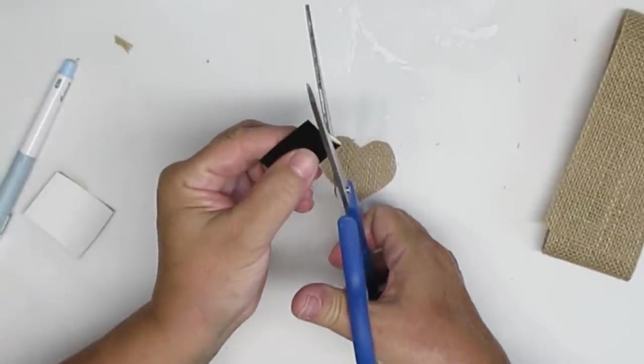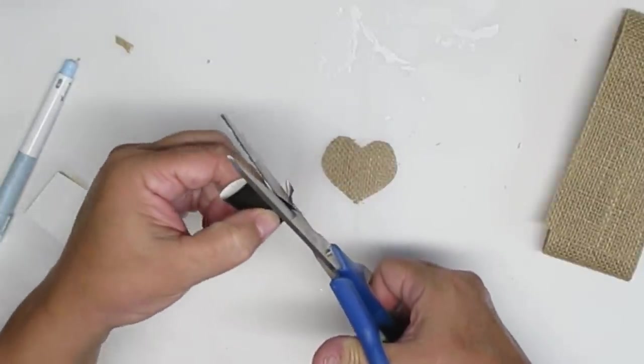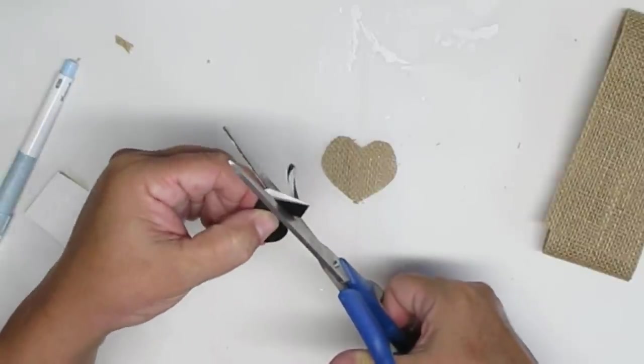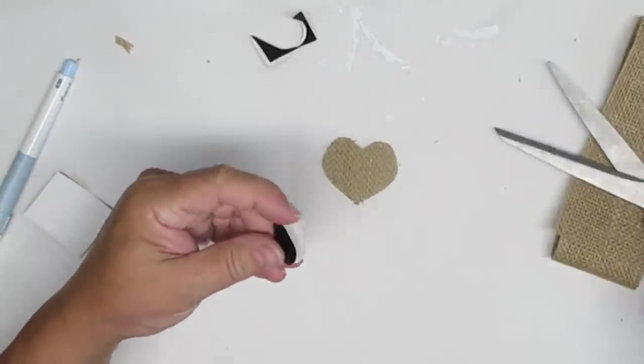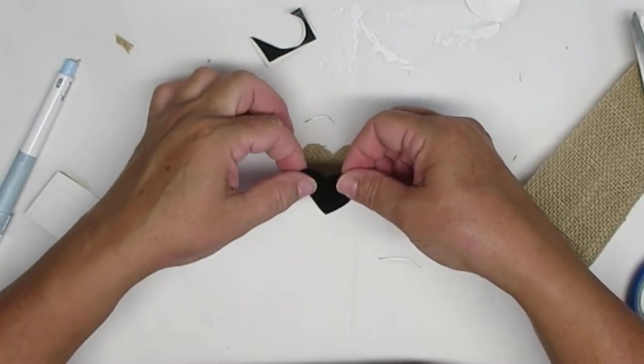When I'm using my Cricut I save every tiny little piece of vinyl that doesn't get used specifically for this type of project. I'm just folding over a piece of black vinyl cutting it into the shape of a heart and then I'll be able to just stick it right onto the burlap heart.